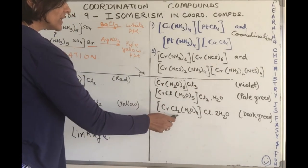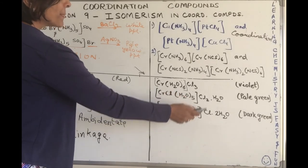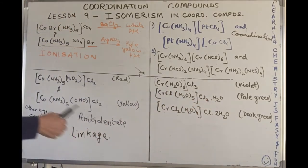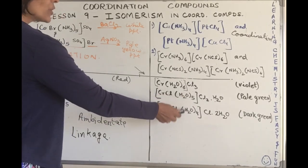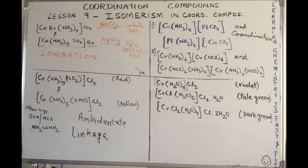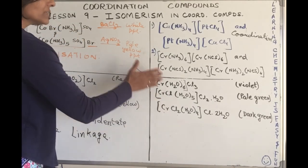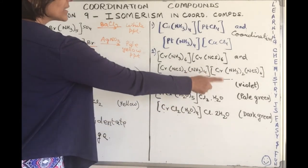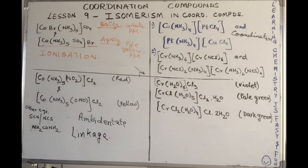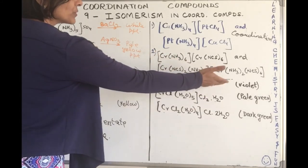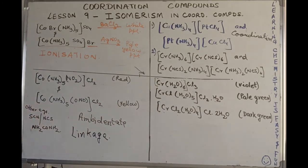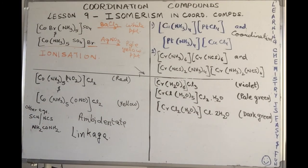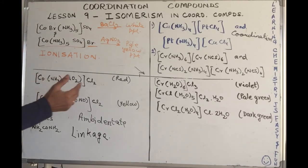If you notice here, this water is outside the square brackets, it's acting as a counter ion, it's acting as a hydrate, whereas these water molecules are acting like aqua. So this behavior or this difference in their structures is also depicted in the difference in the behavior of their compounds. A very simple example: violet, pale green, dark green. What is the difference in colors due to? Yes, the difference in the wavelength of light absorbed that we have already covered under color of coordination compounds, the d-d transitions that take place for electrons in the d orbital.